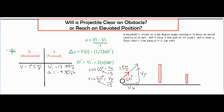At the peak of its arc, VF equals zero meters per second — it is not moving upward or downward at that exact moment. It's still moving horizontally at 7.5 meters per second, but it's not rising or falling. So we now have our three variables, and we can use them to find delta y and compare it to 8 meters.